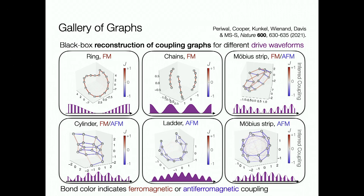The color of the bonds indicates the sign of correlations between sites—ferromagnetic or anti-ferromagnetic—which matches the sign of the coupling we've programmed in. Controlling the sign just involves a pi phase flip of the modulation at the frequency that turns on interactions at a certain distance. It might not be immediately obvious why turning on anti-ferromagnetic interactions produces anti-ferromagnetic correlations, since we haven't adiabatically prepared a ground state—we simply suddenly turn on the light and measure correlations.